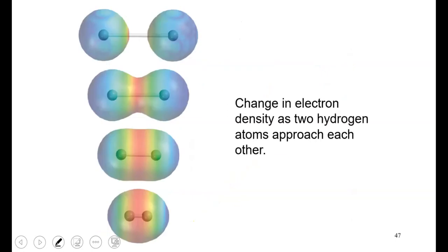Electron density maps show that as the two hydrogen atoms approach, a region of greater electron density builds up right between them, maximized where the interactions with both nuclei are greatest.